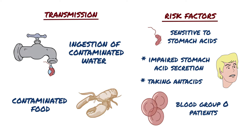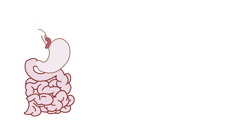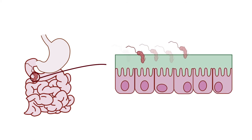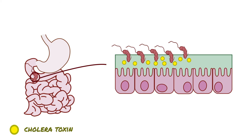How does Vibrio cholerae cause infection? We first ingest the bacteria; it enters the stomach, survives the gastric acid environment, and enters the small intestine. Once it gets into the small intestine, it starts to multiply in the intestinal mucosa and then begins to produce cholera toxin.